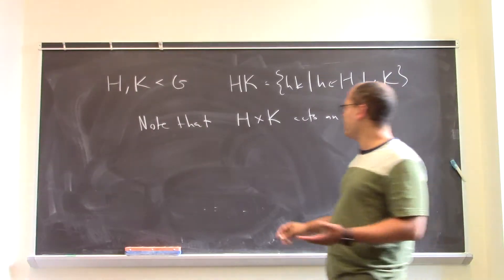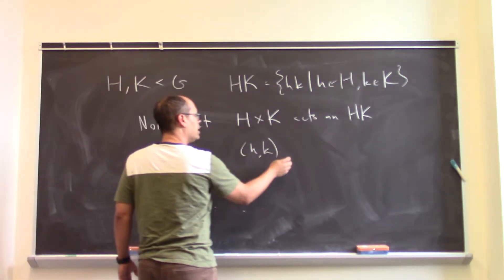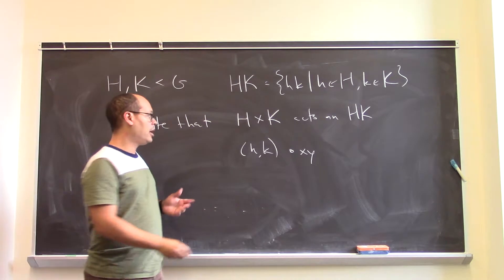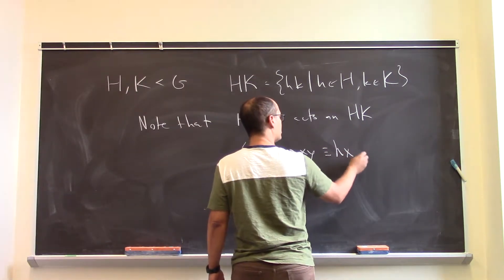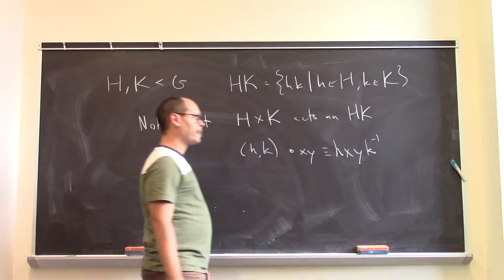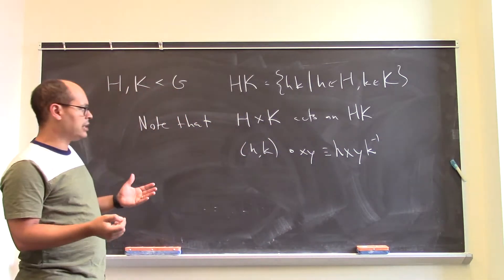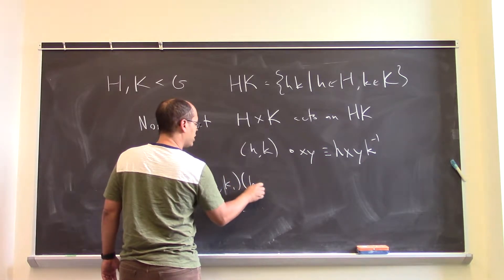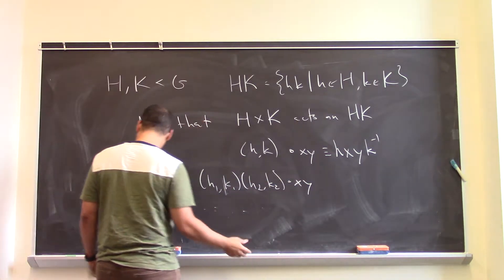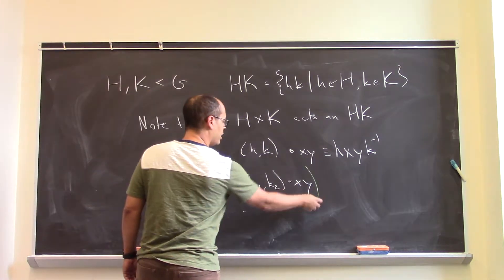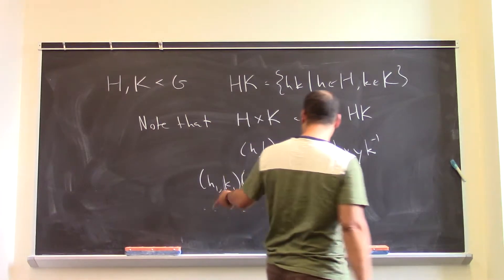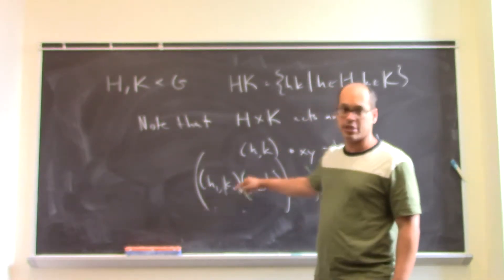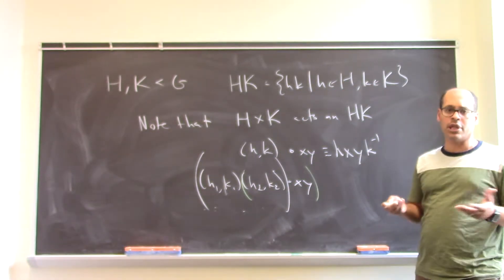So, to do this, we're going to note that the group H cross K acts on HK. It acts in the following way. If I have a pair H comma K and I want to say, okay, how does this act on some little x, little y, where x is in H and y is in K, I'm going to define this action to be Hx, y, K inverse. Okay, so you can just check that this is an action. That amounts to noticing that if I have H1, K1, H2, K2, and I act on x, y, then the two different ways of working this out, either by first acting by the first thing and then acting by this guy, is the same as doing it this way, multiplying these things together and then acting.